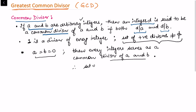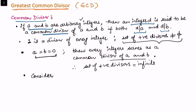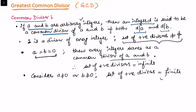If a equals b equals zero, then every integer serves as a common divisor of a and b. In fact, the set of positive divisors in this particular case when both integers are equal to zero is infinite. Now if we consider that a is not equal to zero or b is not equal to zero, in that case the set of positive divisors is going to be finite.